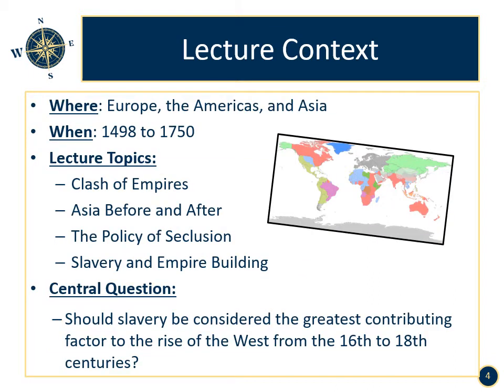Lecture context. Where? Europe and Asia. When? 1498 to 1750. Lecture topics: clash of empires, Asia before and after European contact, the policy of seclusion, slavery and empire building. The central question of the week: should slavery be considered the greatest contributing factor to the rise of the West from the 16th to 18th centuries?